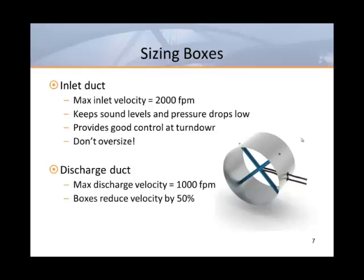As far as discharge ductwork, I like to think of boxes as devices that reduce velocity by 50%. If you have 2,000 feet per minute going in, you shouldn't have more than 1,000 feet per minute coming out. Discharge ductwork should therefore be sized for no more than 1,000 feet per minute. In cases where grills will be tapped directly into the sides of the discharge duct, I would design for no more than 800 feet per minute to prevent the possibility of room air being induced into the first few grills.